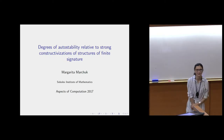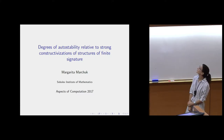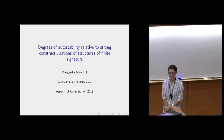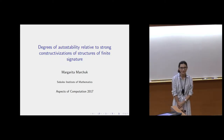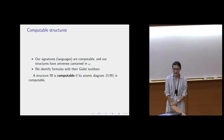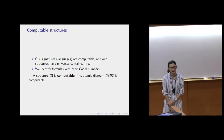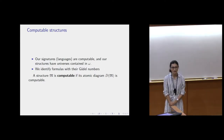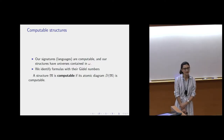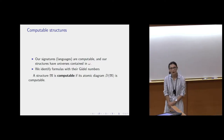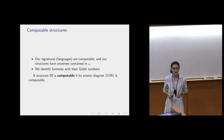Thank you for the invitation and the opportunity to be here at this nice workshop. The title of my talk is 'Degrees of Auto-stability Related to Structures of Finite Signature.' First, I want to give some agreements and main definitions. Our signatures are computable and domains of all our structures are contained in omega. We identify formulas with their Gödel numbers, and when we talk about computable structures we mean that their atomic diagram is computable. This means we can effectively determine whether a first-order formula without quantifier is true on elements from the domain.